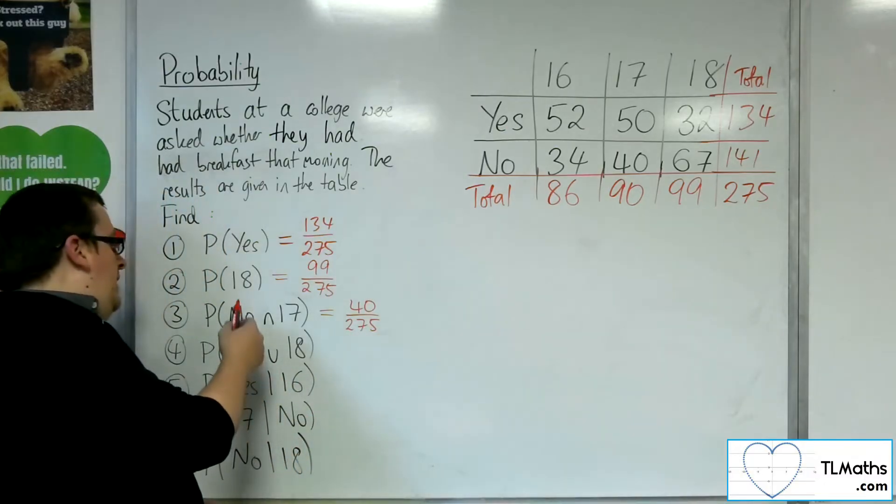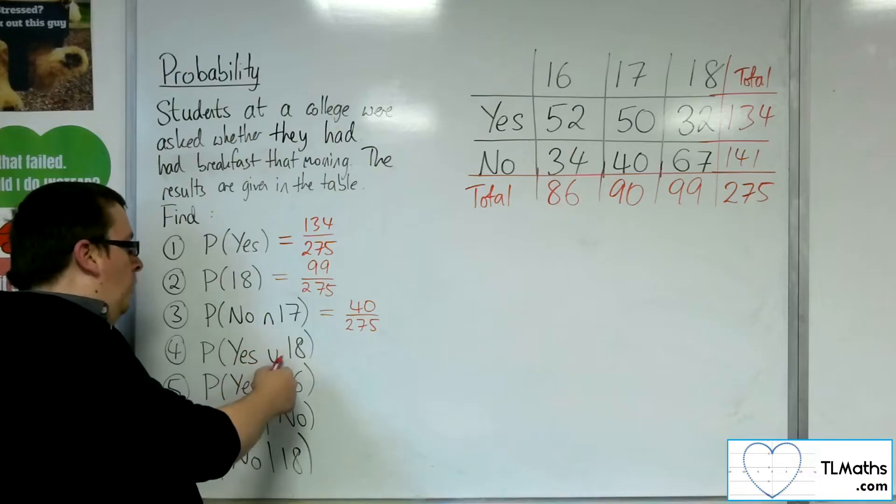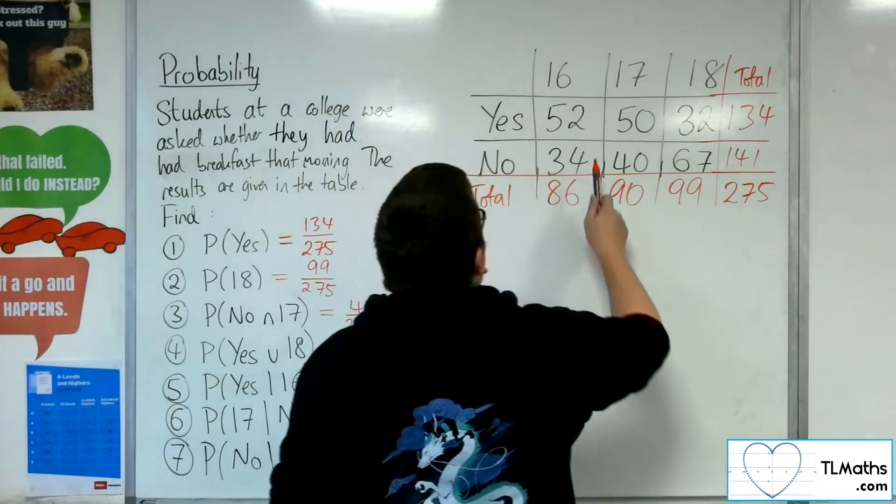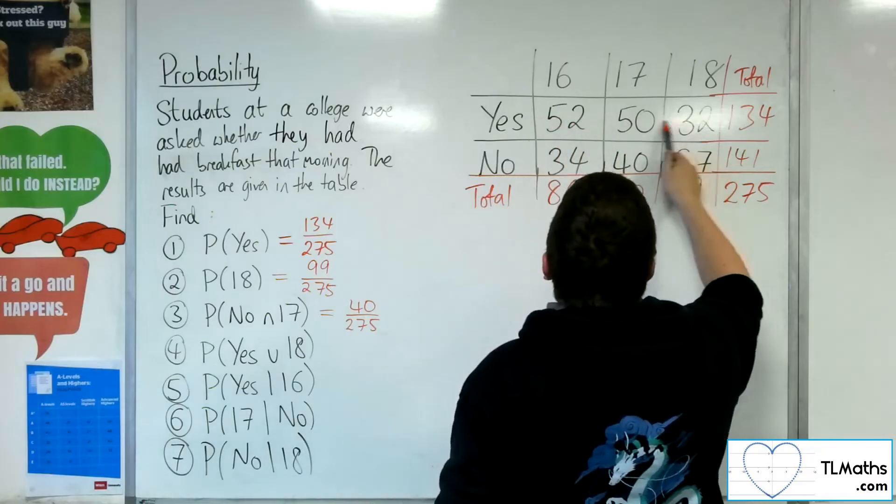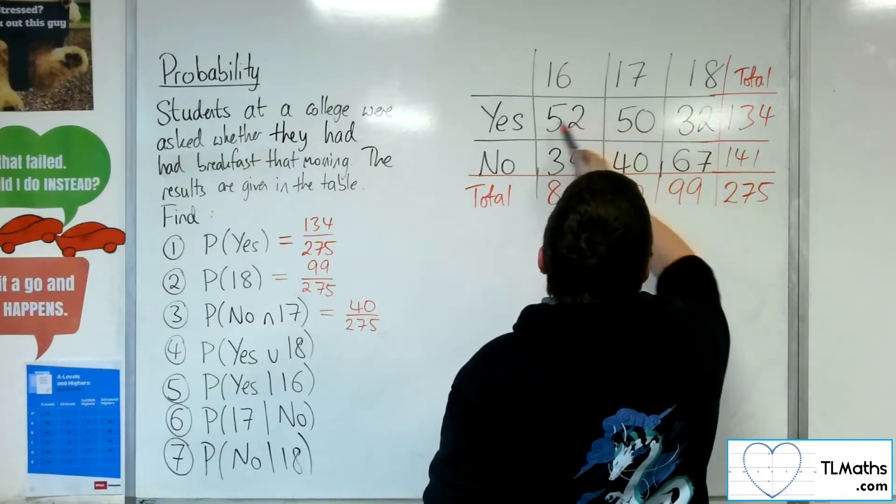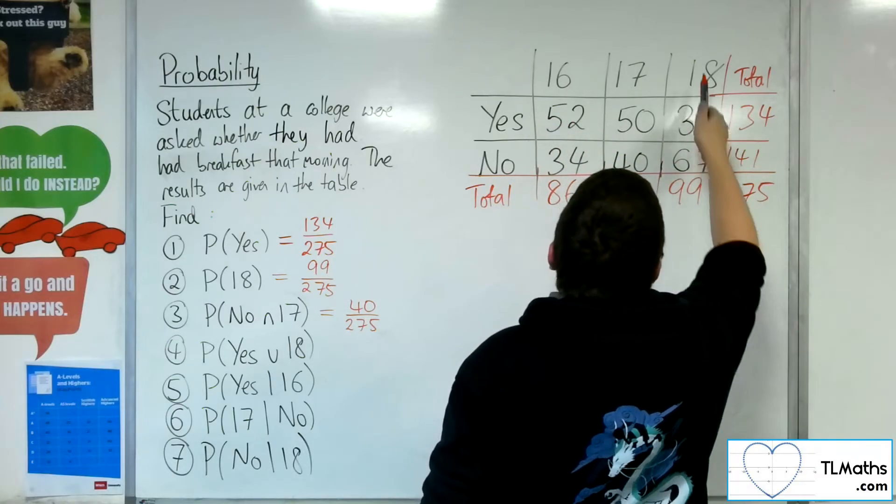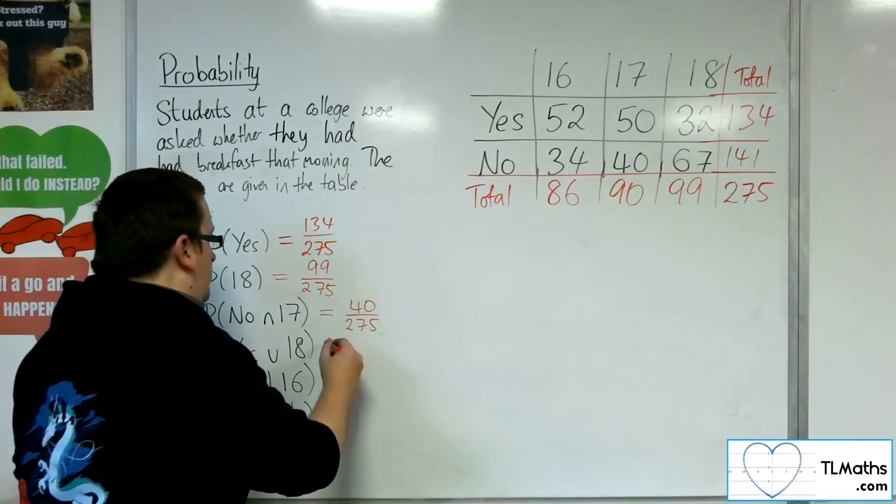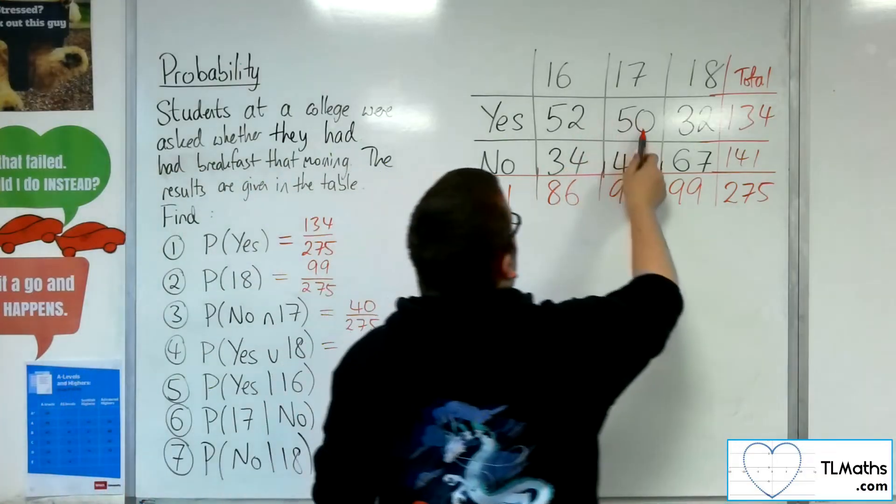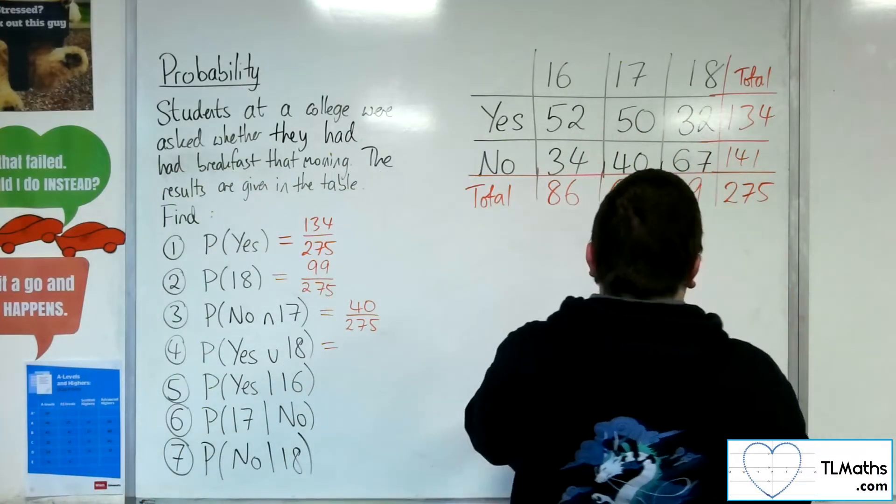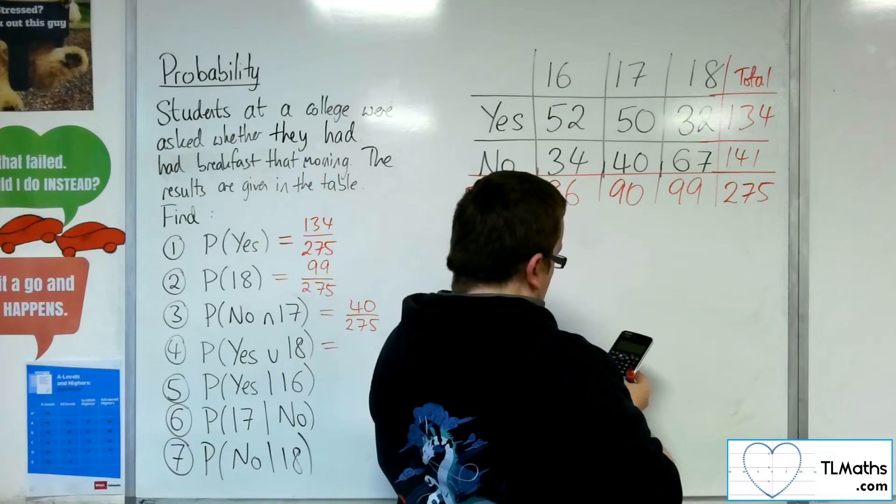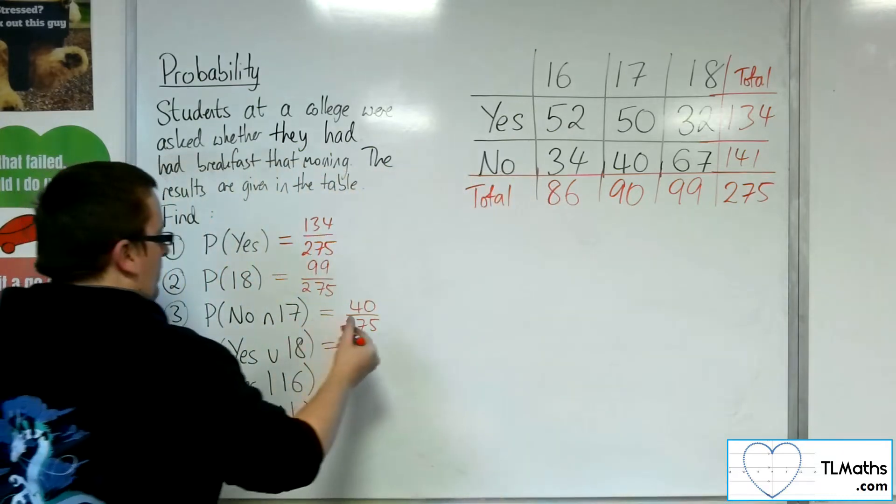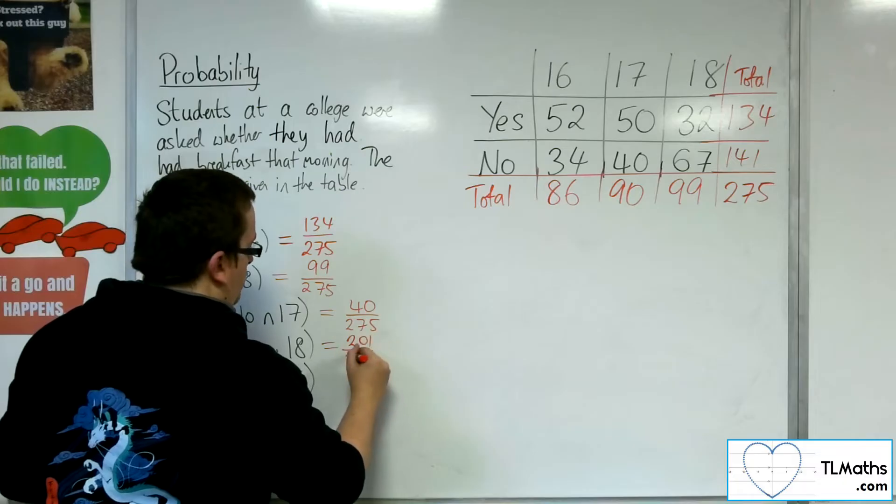Now the probability of saying yes or being 18, what that is implying is that we're including anyone that said yes and anyone that was 18, including the intersection. Okay, so we're looking at 52 plus 50 plus 32 plus 67. So 134 plus 67 is 201. So that'd be 201 out of 275.